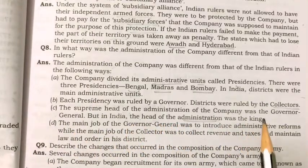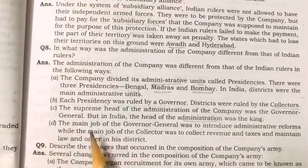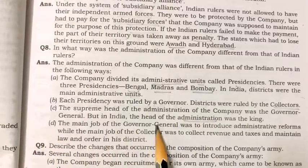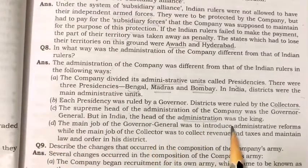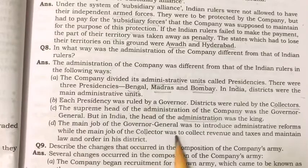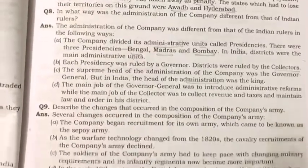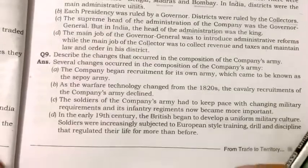The supreme head of the administration of the company was the Governor General, but in India the head of administration was the king. The main job of the Governor General was to introduce administrative reforms, while the main job of the collector was to collect revenue and taxes and maintain law and order in his district.